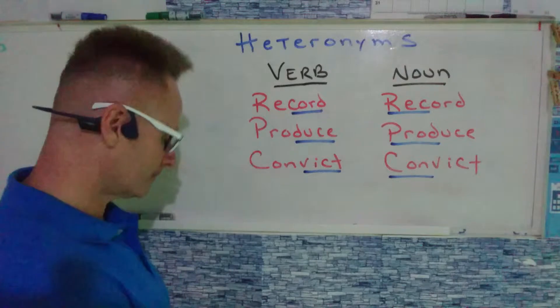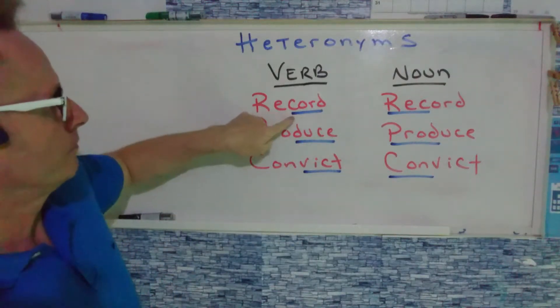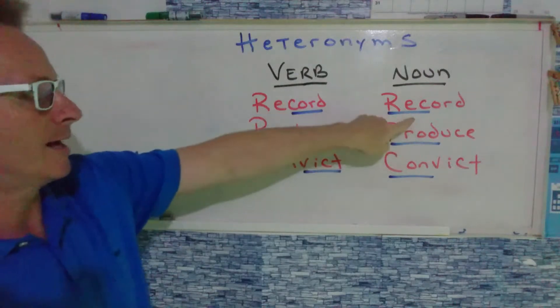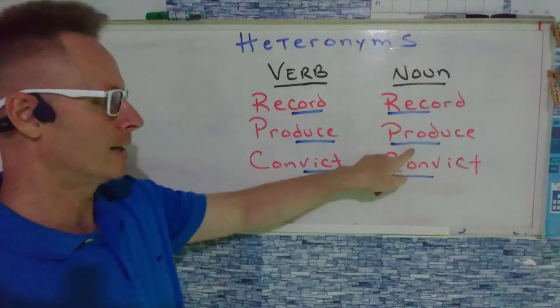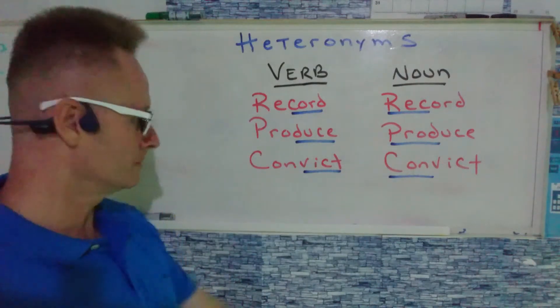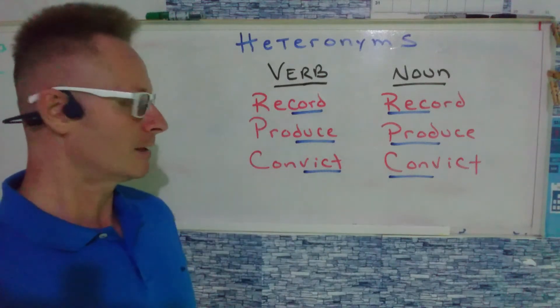Just a short recap. The verb record. The noun record. The verb produce. The noun produce. The verb convict. And the noun convict.